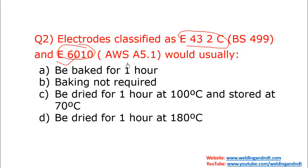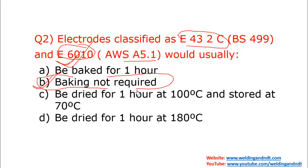E6010 is an AWS A5.1 classification. The options are: be backed for one hour; baking not required; be dried for one hour at 100°C and stored at 70°C; or be dried for one hour at 180°C. E6010 electrodes are general electrodes and do not require any baking. Option B is the correct answer — baking not required. These electrodes must be dry only.